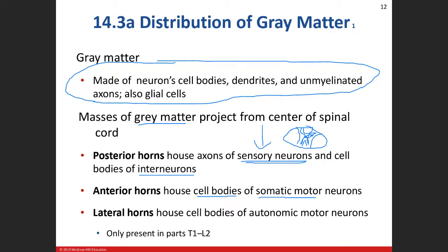Then we have our lateral horns. They're only present in T1 through L2 of the spinal cord — we'll talk about that when we get to Chapter 15. In the lateral horn, we see the cell bodies of our autonomic motor neurons. Autonomic motor neurons innervate cardiac muscle, smooth muscle, and glands.